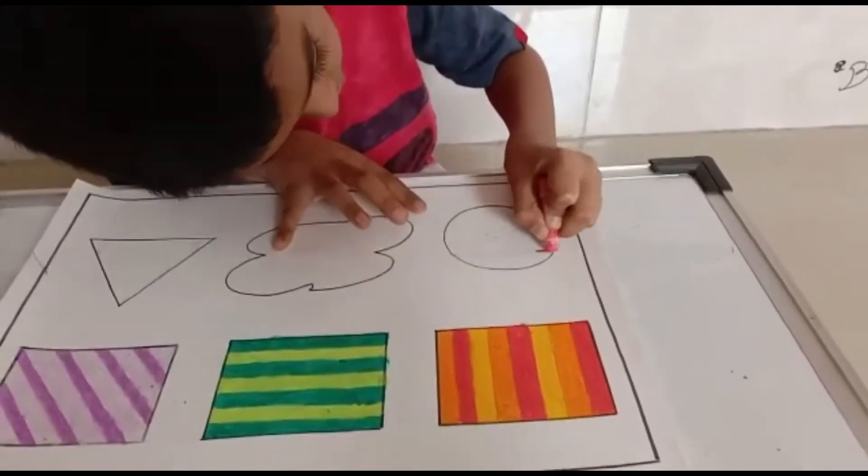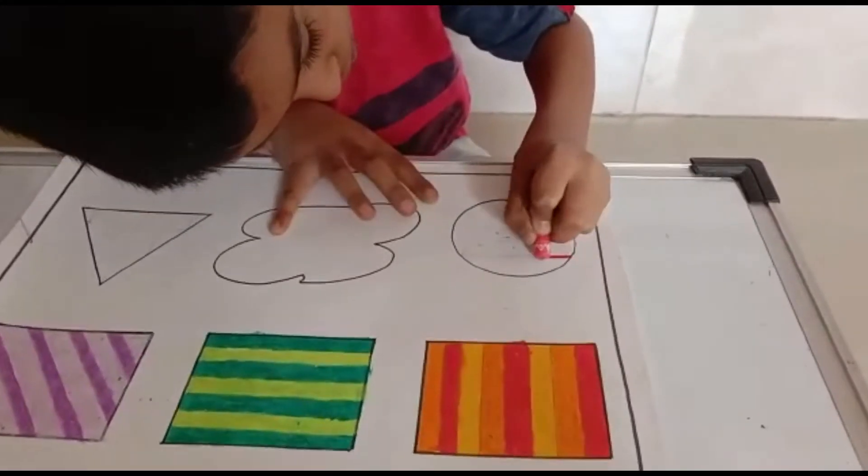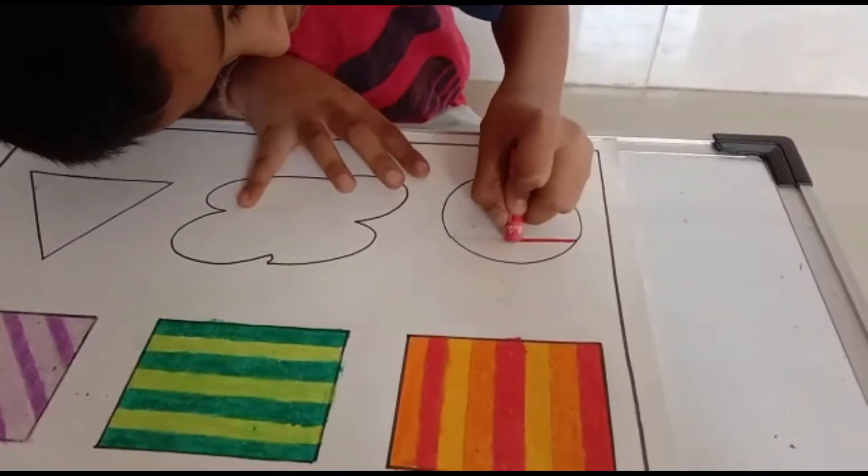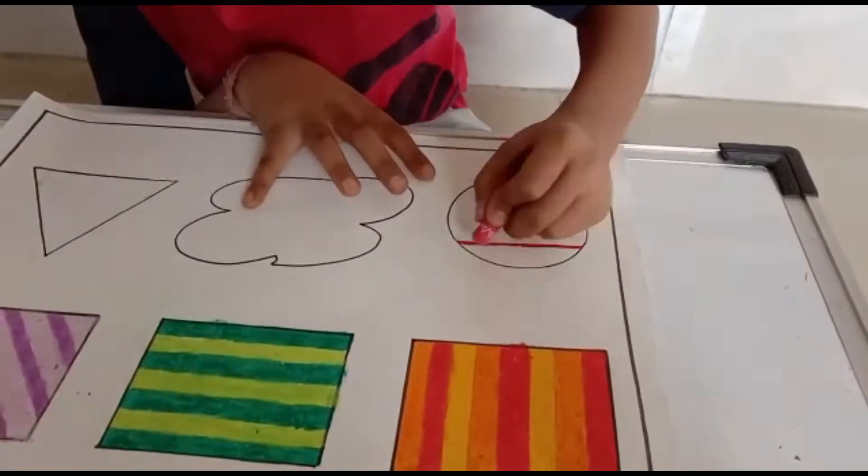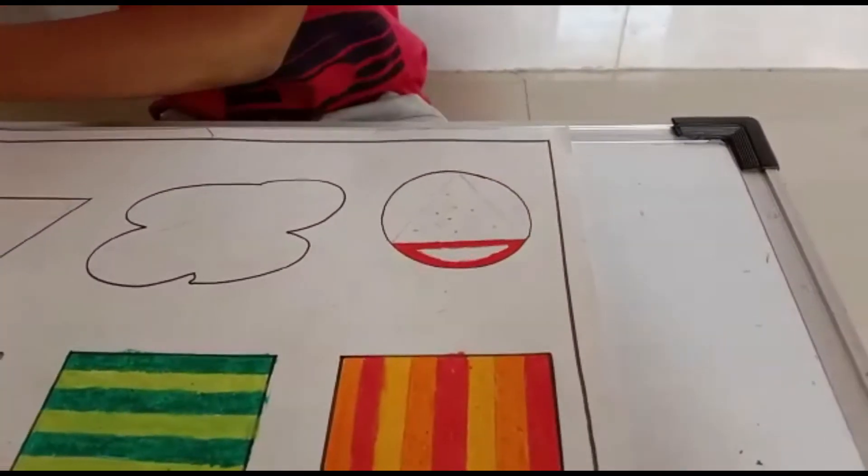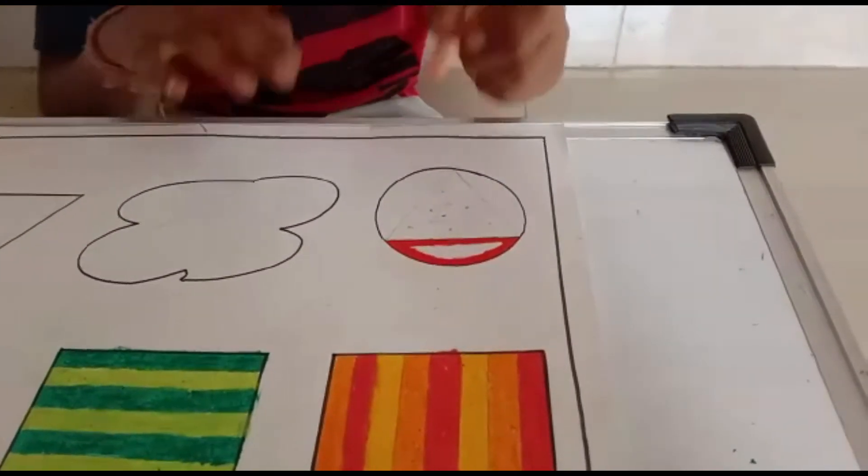So first, we will color this in a circle. Now we will do the second shade.